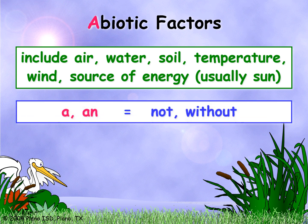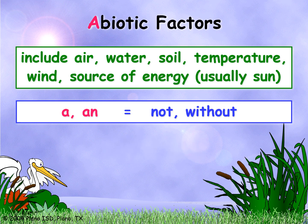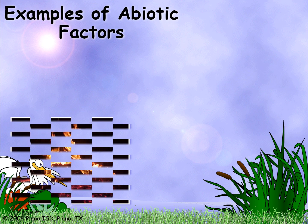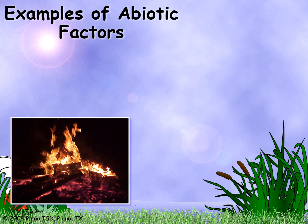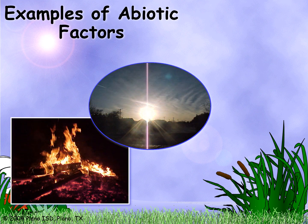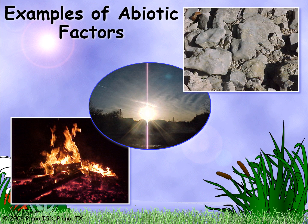The prefix 'a' means 'not' or 'without,' as in words like atoxic, amoral, abiotic, and amusia. Examples of abiotic factors include fire, sunlight, and rocks.